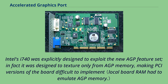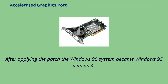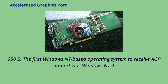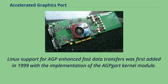Intel's i740 was explicitly designed to exploit the new AGP feature set; in fact it was designed to texture only from AGP memory, making PCI versions of the board difficult to implement. Microsoft first introduced AGP support into Windows 95 OEM Service Release 2 via the USB supplement to OSR 2 patch. The first Windows NT-based operating system to receive AGP support was Windows NT 4.0 with Service Pack 3, introduced in 1997. Linux support for AGP-enhanced fast data transfers was first added in 1999 with the implementation of the AGPGART kernel module.